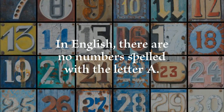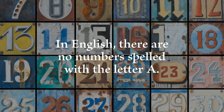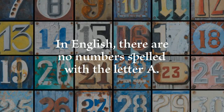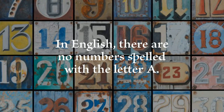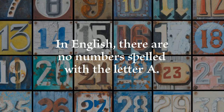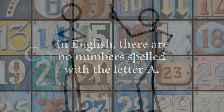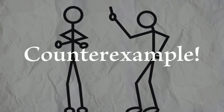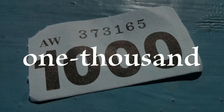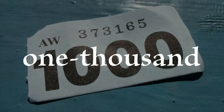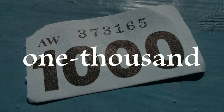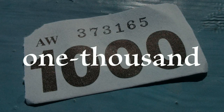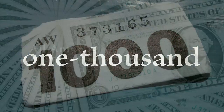Provide an example contradicting the statement: In English, there are no numbers spelled with the letter A. Brainstorm how to spell numbers. 1,000 is a number — in English, the number 1,000 is spelled with an A.